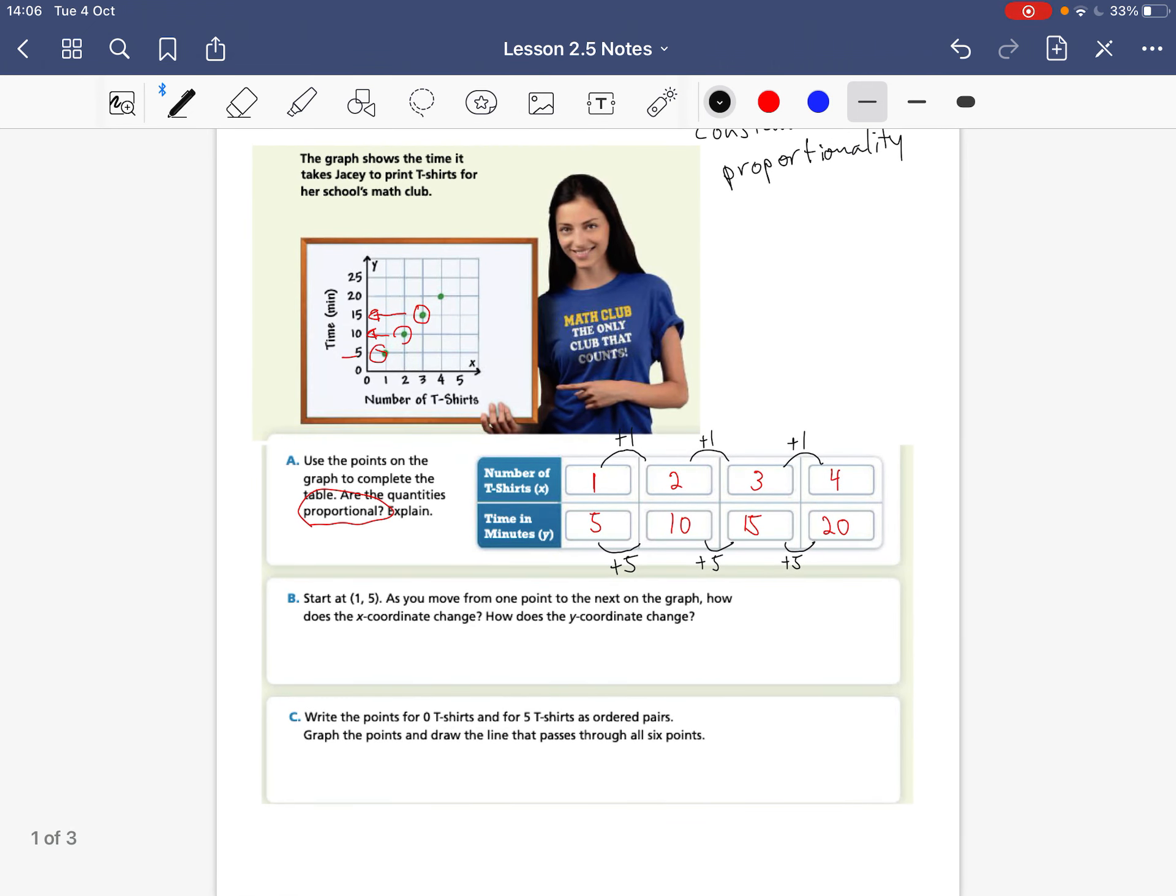So write the points for 0 t-shirts and 5 t-shirts as an ordered pair. And we're going to graph this. So we'll do this here. For 0 t-shirts, that's going to be 0. How long would it take to make 0 t-shirts or to sell 0 t-shirts? Well, 0 minutes. So that would be 0, 0. And I've plotted that up here at the origin, 0, 0.